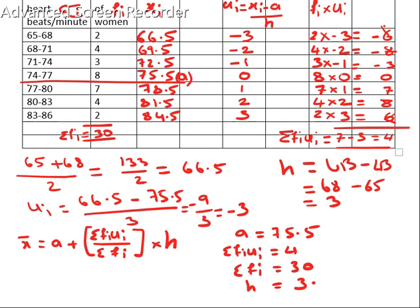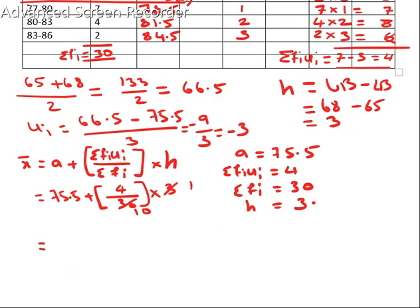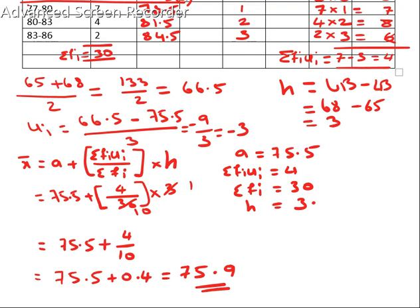Substituting all values in the formula: 75.5 plus fi ui is 4, by fi is 30, into h is 3. After cancellation, 3 cancels with 30 to give 10. So we get 75.5 plus 4 by 10, which is 75.5 plus 0.4, that is equal to 75.9. So this is the mean using the step deviation method. This is how we find out mean using the step deviation method.